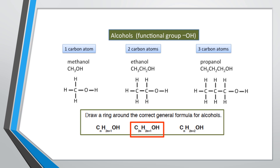Methanol differs from ethanol by a CH2 group, and propanol differs from ethanol by also a CH2 unit. In terms of physical properties such as boiling point, propanol has a higher boiling point than ethanol, and ethanol has a higher boiling point than methanol. This illustrates that physical properties gradually change from each member of the homologous series.